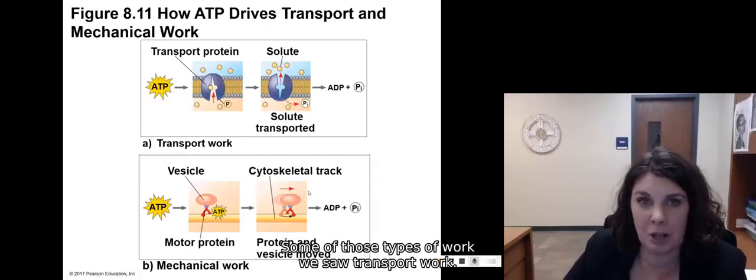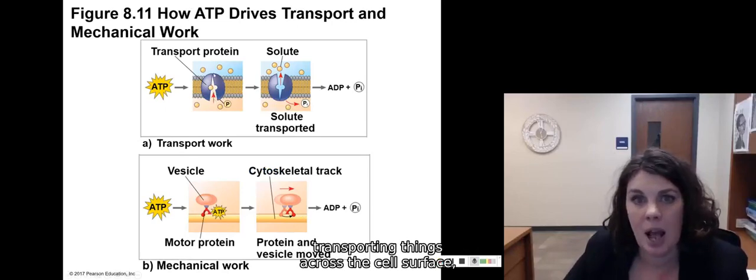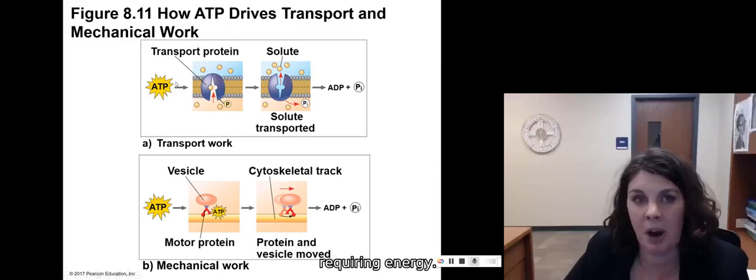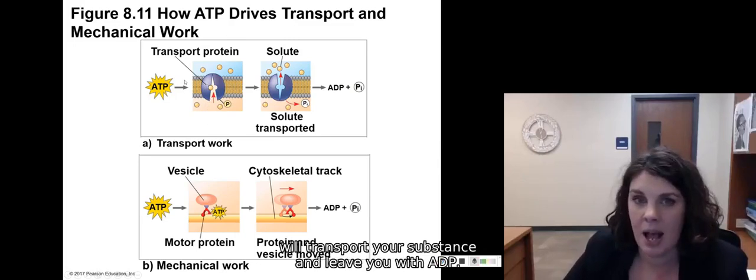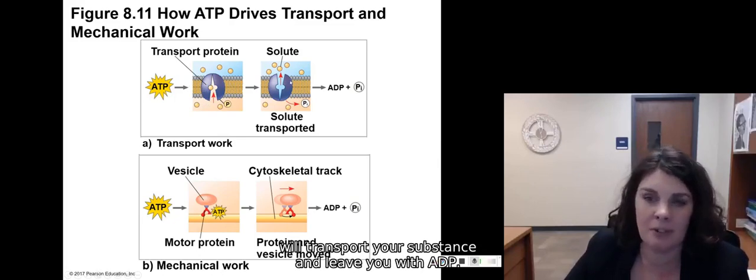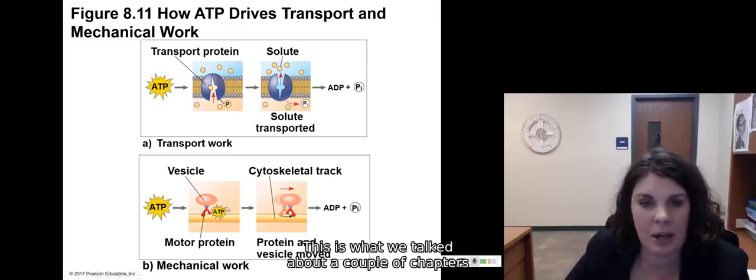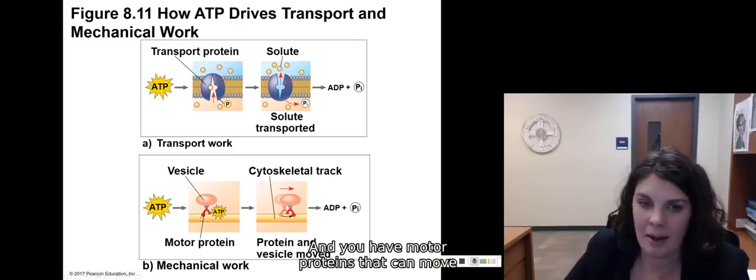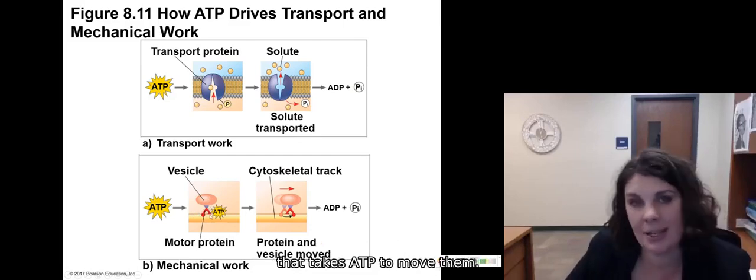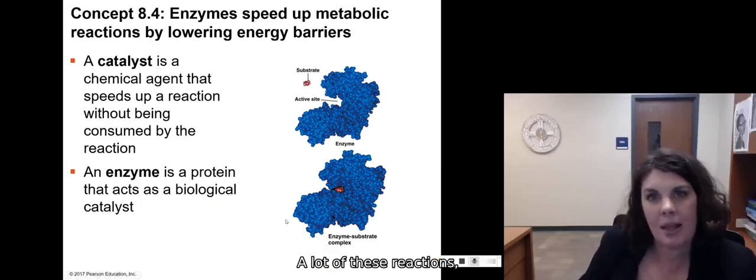So some of those types of work we saw, transport work. So this is what we talked about in the last chapter, transporting things across the cell surface, requiring energy. Active transport takes that energy, will transport your substance and leave you with ADP. Transport mechanical work. This is what we talked about a couple of chapters ago when we talked about cytoskeletons and you have motor proteins that can move things along your cytoskeleton. That takes ATP to move them.